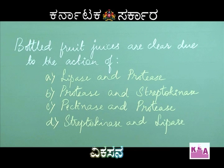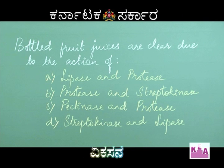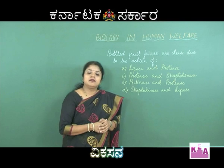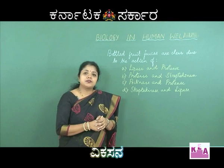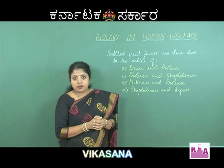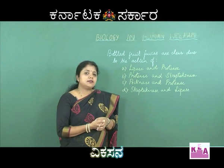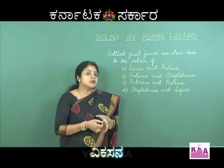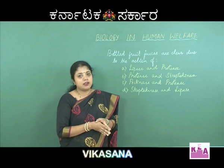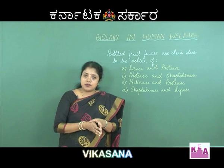The next question: Bottled fruit juices are clear due to the action of — option A, lipase and protease; option B, protease and streptokinase; option C, pectinase and protease; option D, streptokinase and lipase. Microbes have a huge market in industrial products, including alcohol production, antibiotics production, and enzymes. Lipase is used in detergent formulation to remove oily stains and sometimes to flavor cheese.